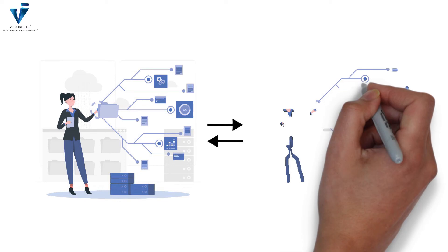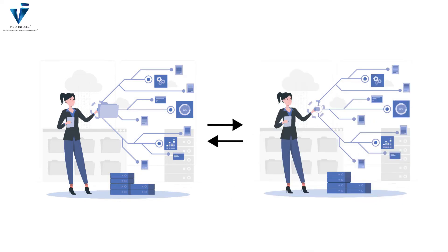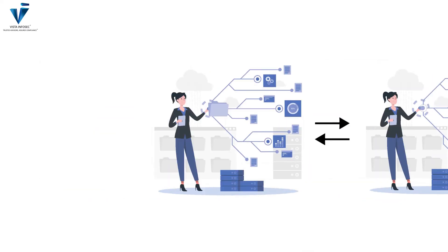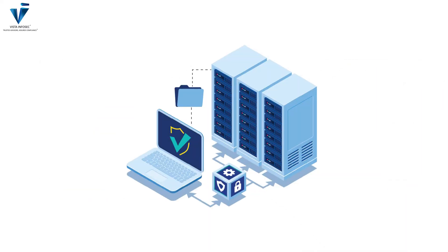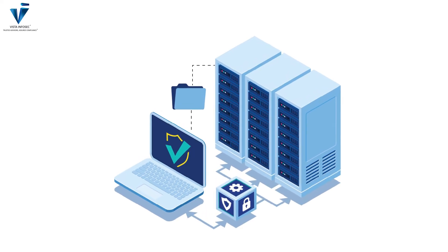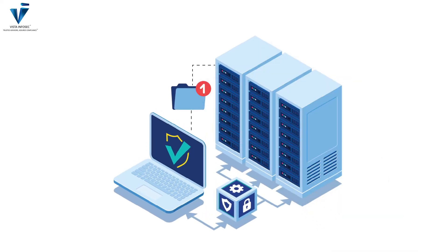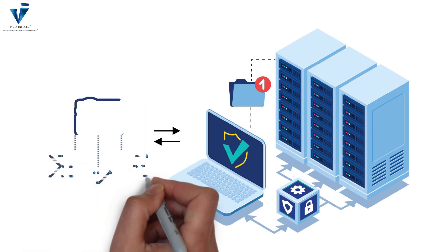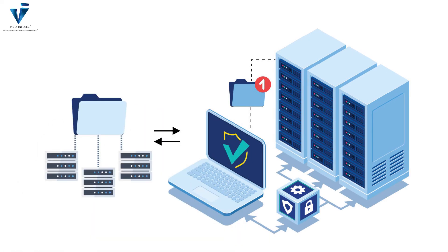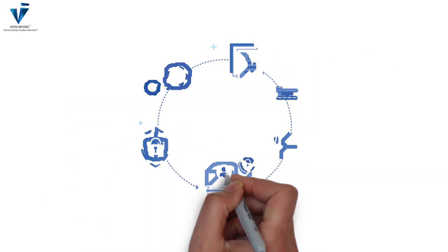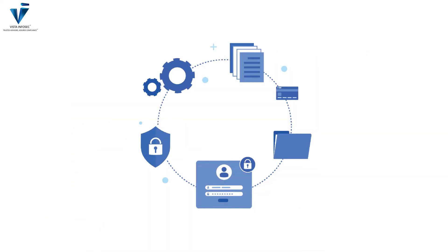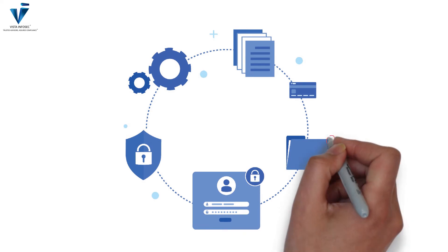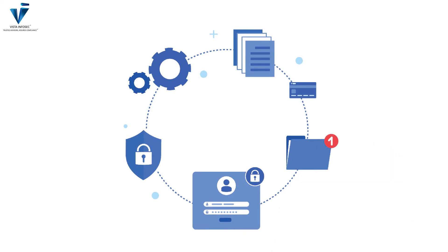With truncation, only a fraction of the PAN gets stored with the vendor, with the rest of the data permanently deleted. Using this technique, the PAN data is rendered unreadable and will no longer be considered cardholder data if stored in the environment. This is the most common practice adopted by vendors to render PAN data unreadable and deal with growing credit card fraud in the industry.